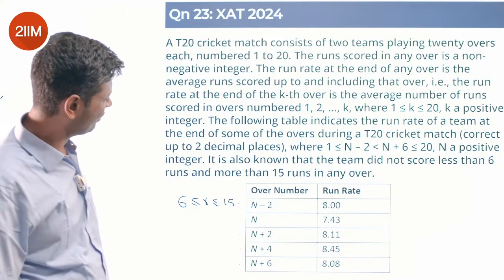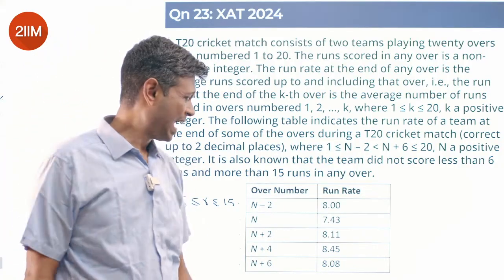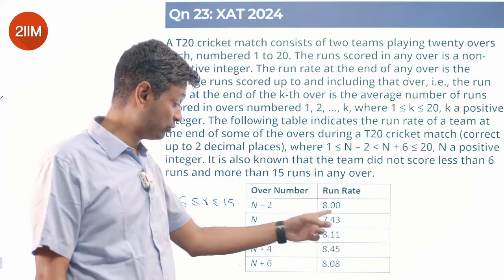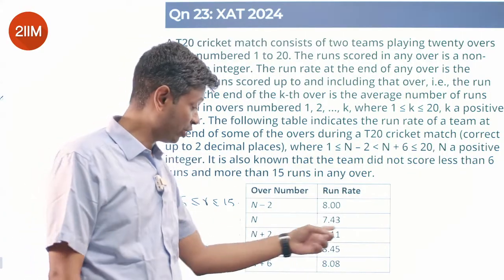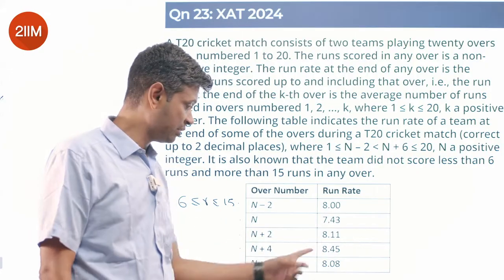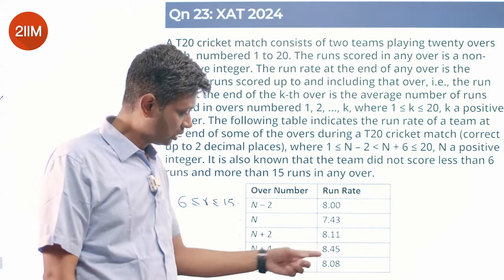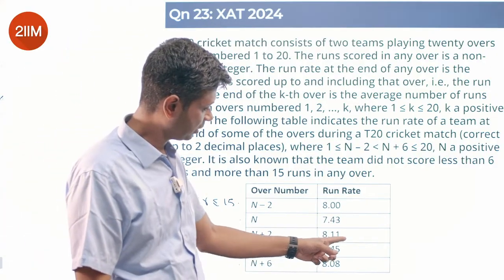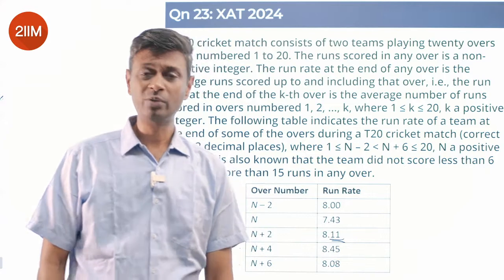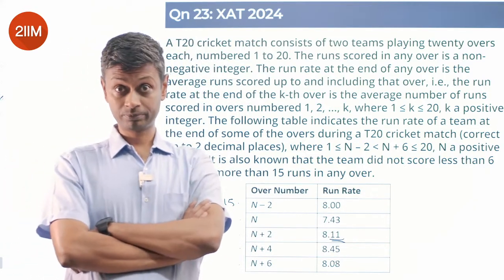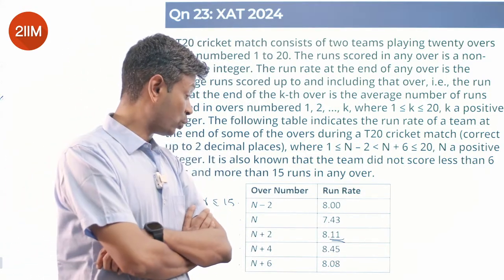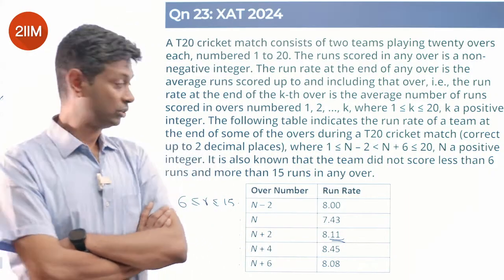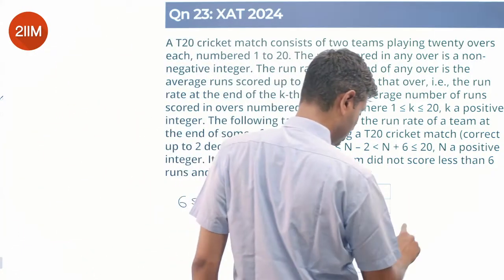If we can find n, the problem becomes simpler. The run rates given are: 8 at n-2 overs, 7.43 at n overs, 8.11 at n+2 overs, 8.45 at n+4 overs, and 8.08 at n+6 overs. The juiciest number here is 0.11, because 0.11 is 1/9. So 8.11 = 8 and 1/9 = 73/9.